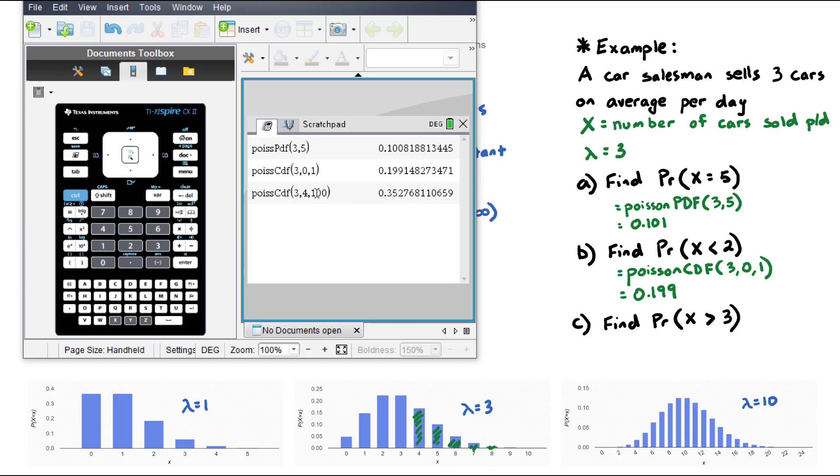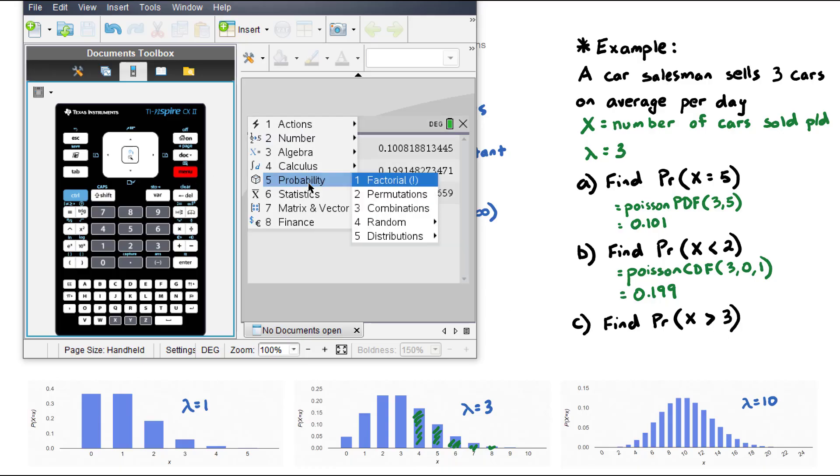Some calculators don't have the functionality for an upper range. So in that case, we would actually need to do the complement of this and do 1 subtract the probability of 3 or less. So menu, probability, distributions, down to Poisson CDF.